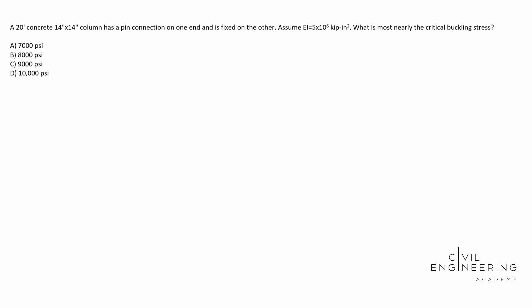Today we have a structural mechanics problem, in particular a column problem. Here's what the question asks. A 20-foot concrete 14-inch by 14-inch column has a pin connection on one end and is fixed on the other. Assume EI equals 5 times 10 to the 6th power, kips inches squared. What is most nearly the critical buckling stress?